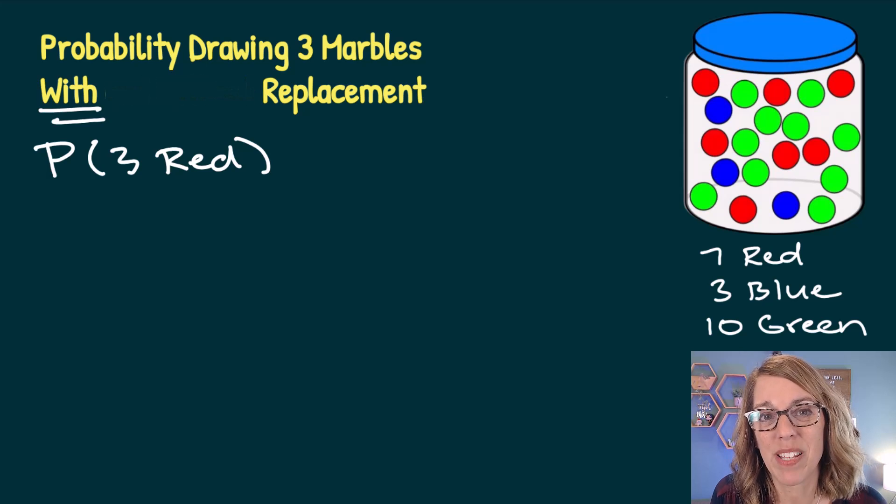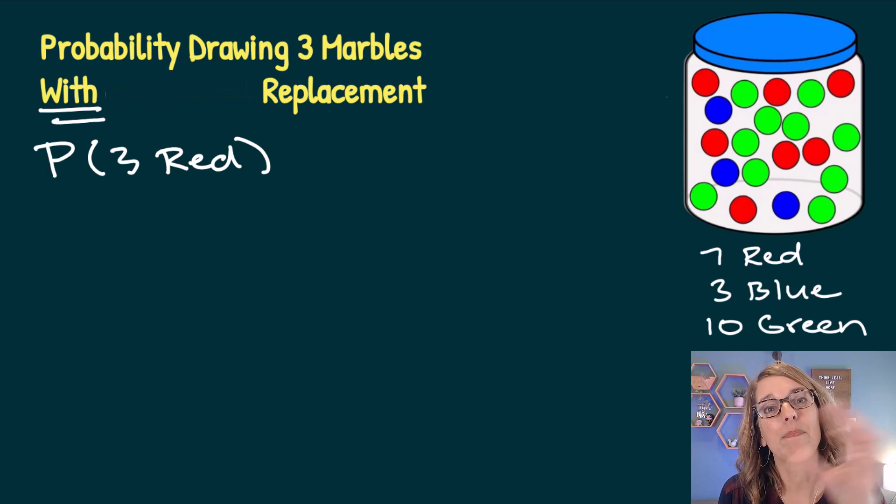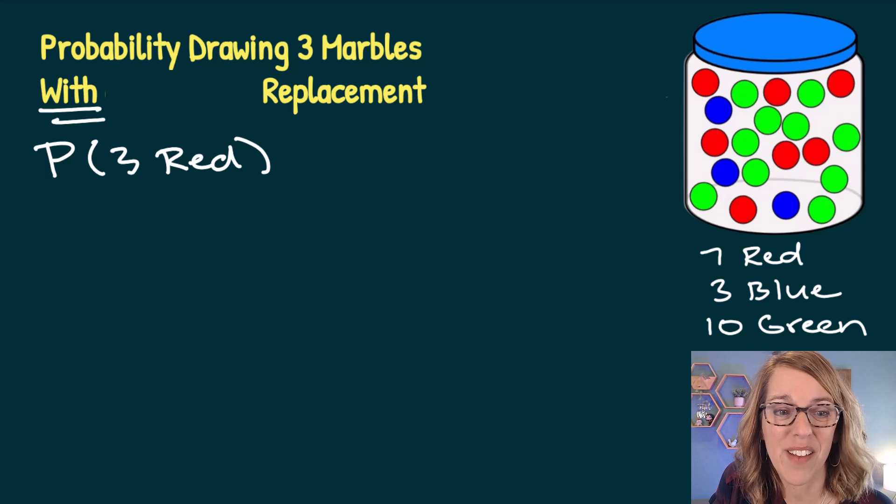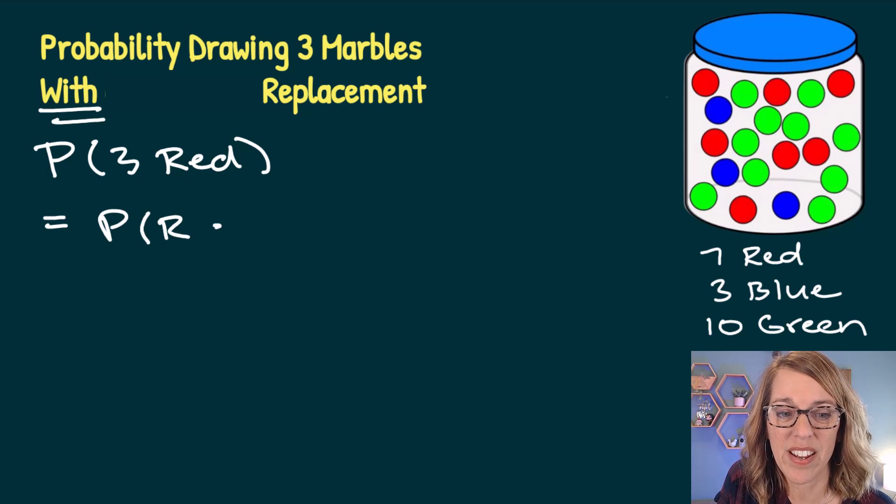We're going to start with replacement. That means that I'm going to draw that first marble, put it back in before I draw the second marble. The probability of three red becomes the probability of getting the first one red and the second one red and the third one red.